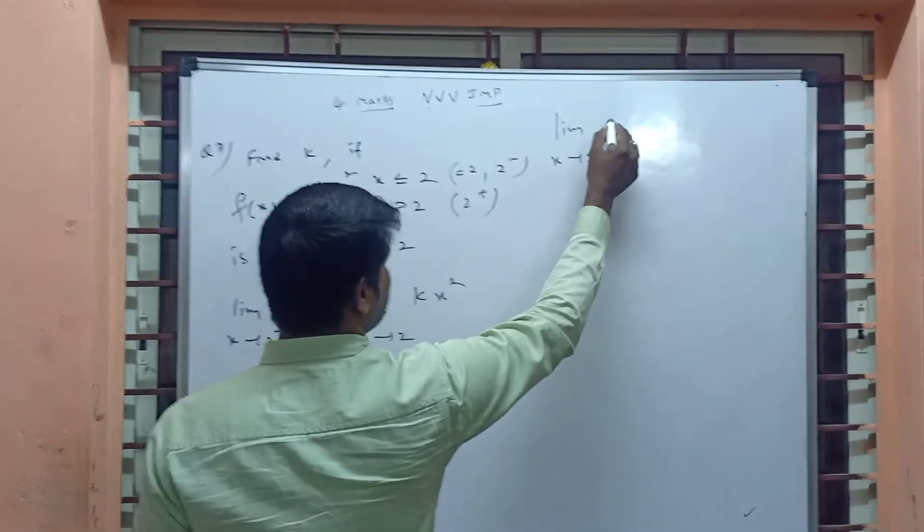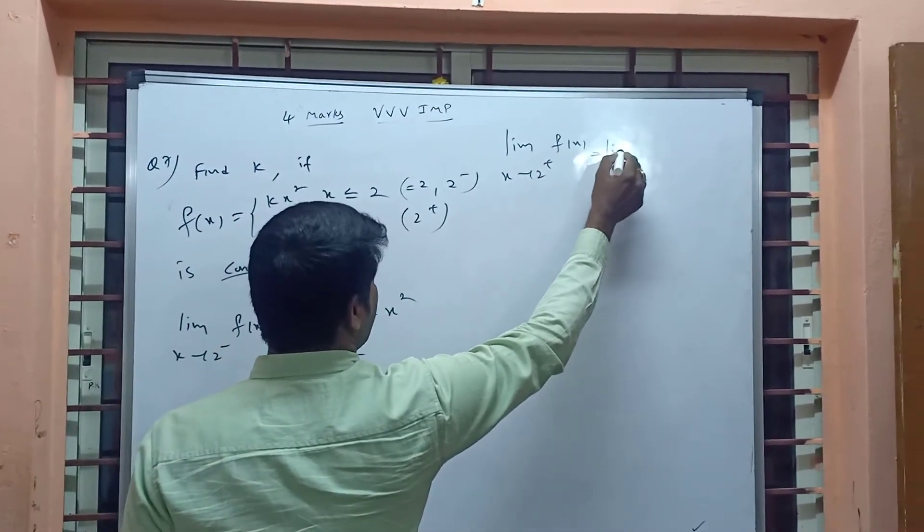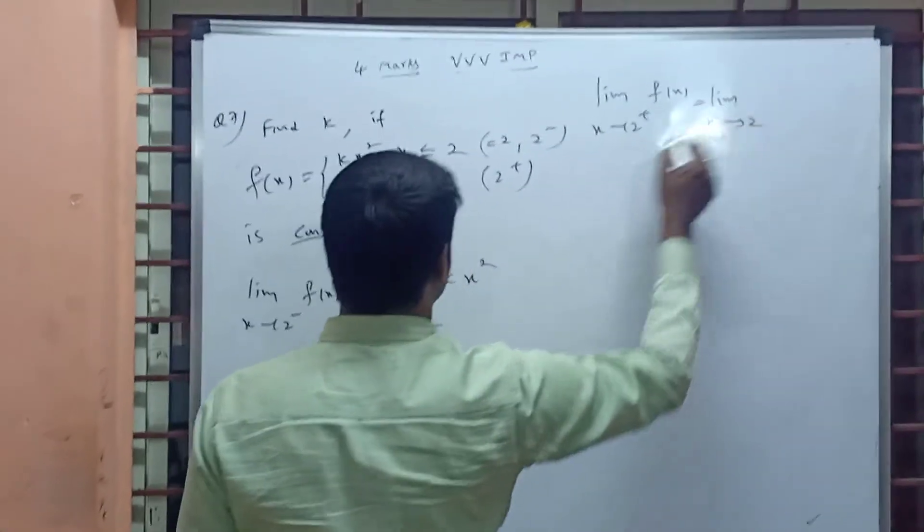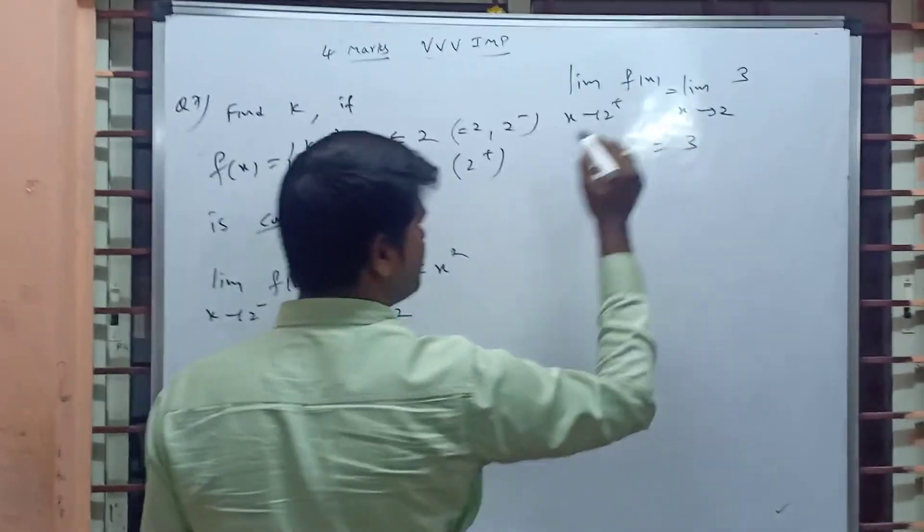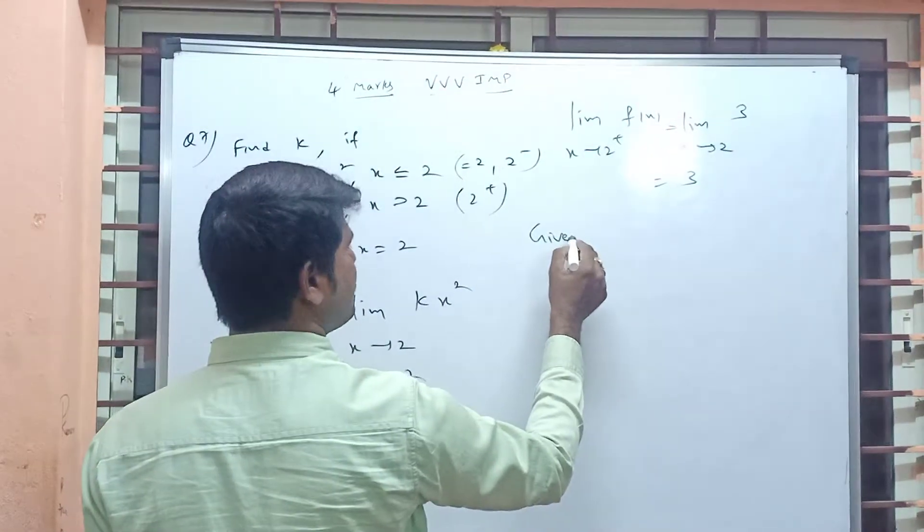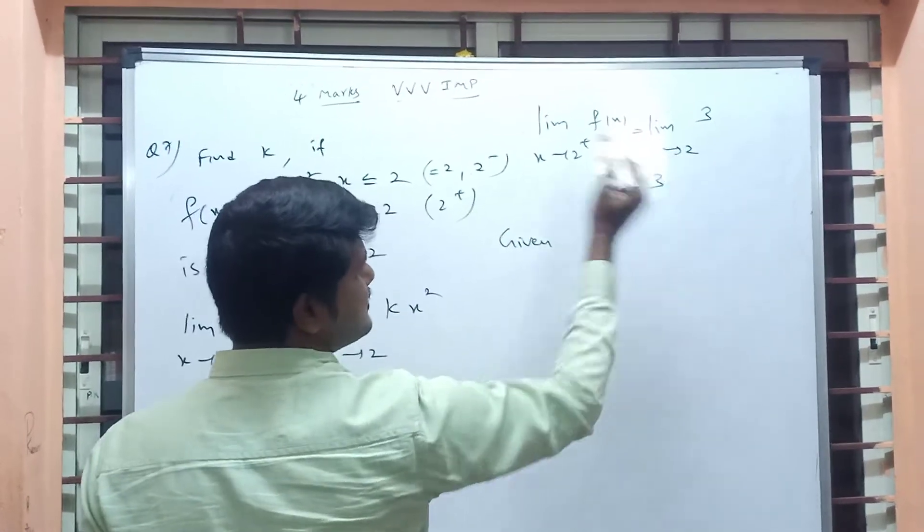Limit x tends to 2 plus f(x) is equal to, limit x tends to 2, 3. What is the answer? 3. Given, because here x, that's a direct answer, 3.